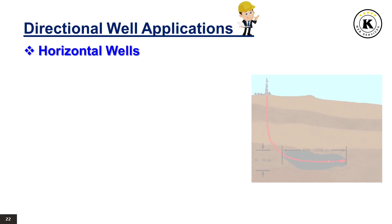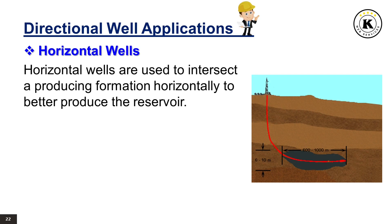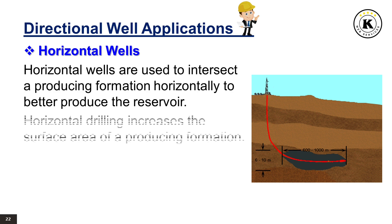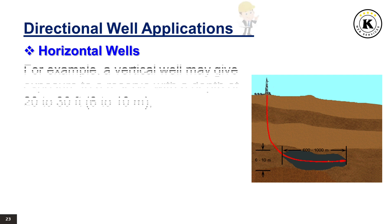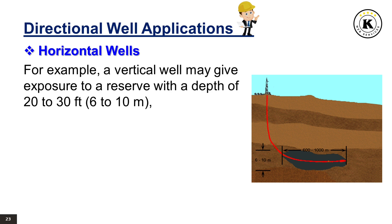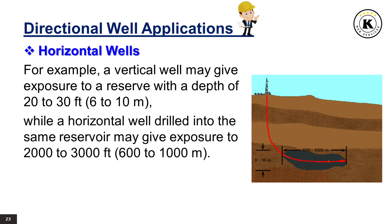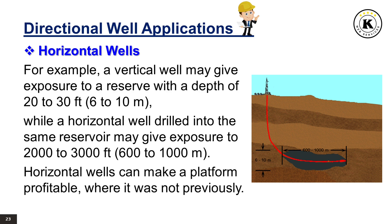Horizontal Wells are used to intersect a producing formation horizontally to better produce the reservoir. Horizontal drilling increases the surface area of a producing formation. For example, a vertical well may give exposure to a reserve with a depth of 20 to 30 feet, while a horizontal well drilled into the same reservoir may give exposure to 2,000 to 3,000 feet. Horizontal wells can make a platform profitable where it was not previously.